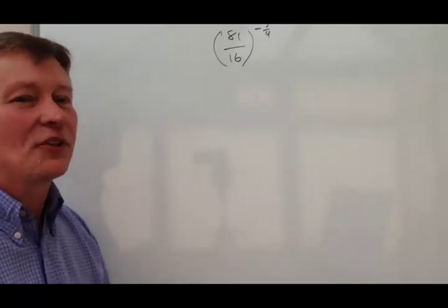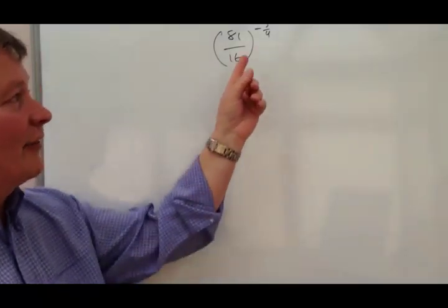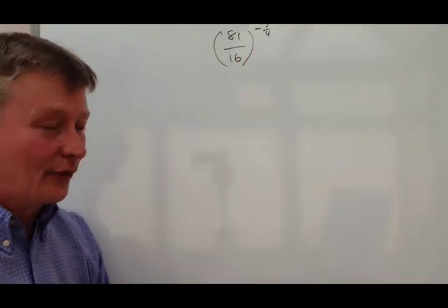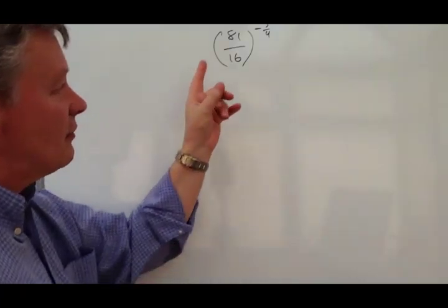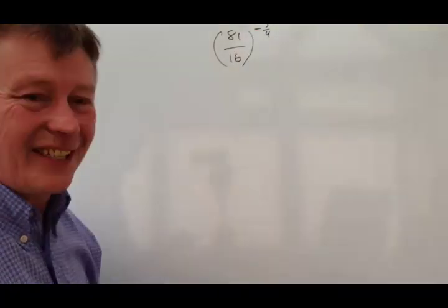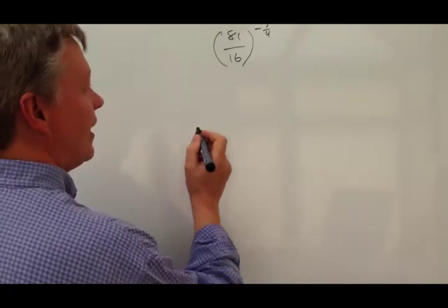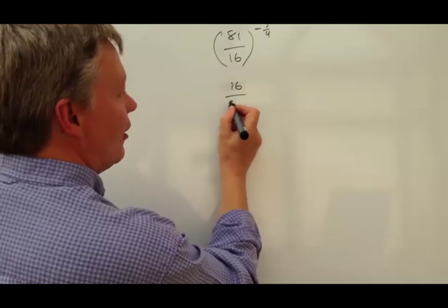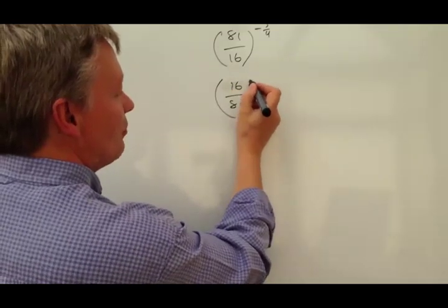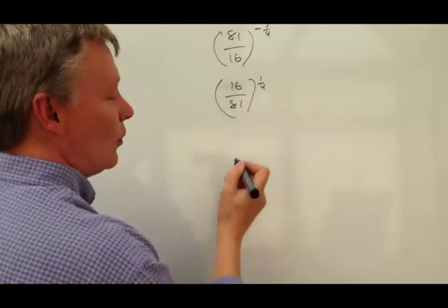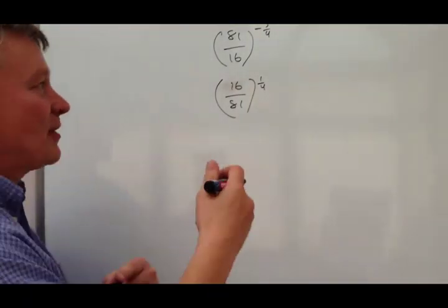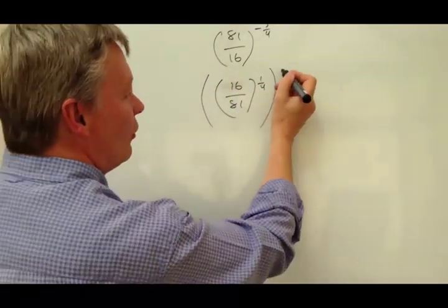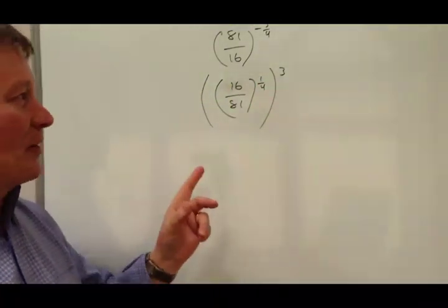Once you get to these sorts of things you really do know it's a fairly high level question. Because it's a negative number, I'm going to flip it around the other way. So what I'm going to say is that this is exactly the same as 16 over 81 to the power of one quarter. So I've flipped it around, and I'm going to multiply all of that by three.